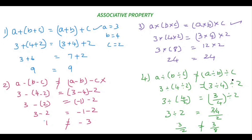So to summarize: associative property holds good for addition and multiplication; it does not hold good for subtraction and division — pretty similar to commutative property. When you compare both, commutative property has two variables and associative property has three variables; that is the only difference between these two properties.